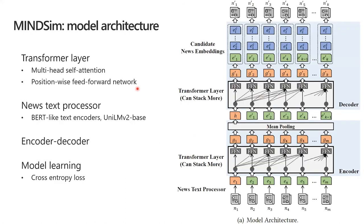Here is the model architecture of MindSync. It is an encoder-decoder architecture consisting of multiple transformer layers. First, each news article is encoded into vectors by a pre-trained BERT-like text encoder, so rich text information in news can be utilized. Then, the encoder takes all input news into stacked transformer layers and aggregates them into a hidden vector H. Starting from H, the decoder predicts a sequence of news factors in an autoregressive way. For the final matching part, we calculate the score for each candidate news through the dot product between the predicted news factor and the candidate news embeddings, and choose the one with the maximum score. The whole model is end-to-end optimized with cross-entropy loss.